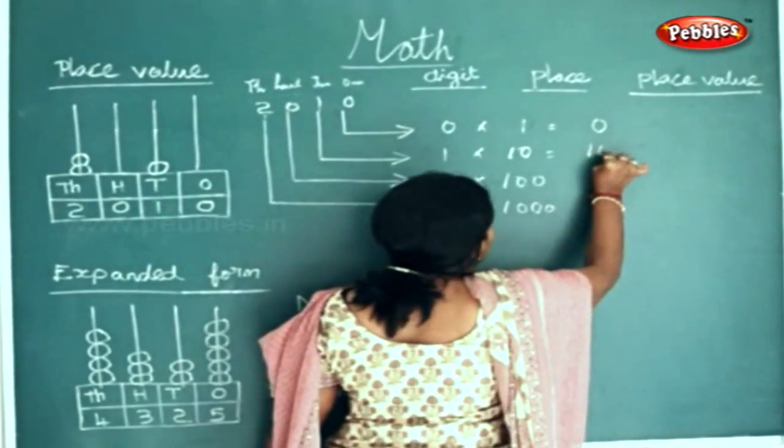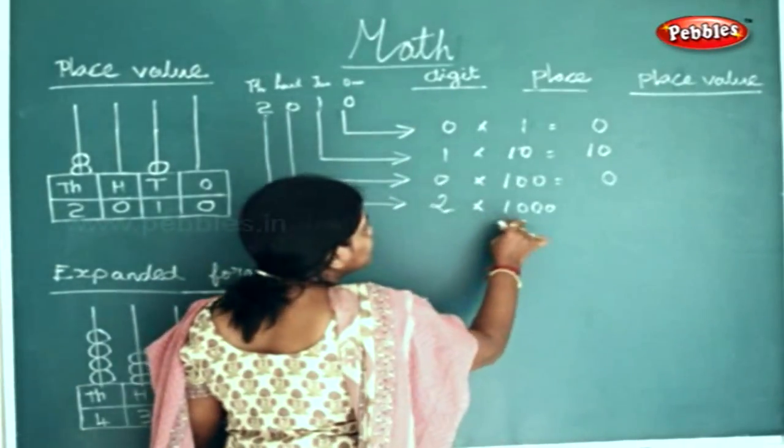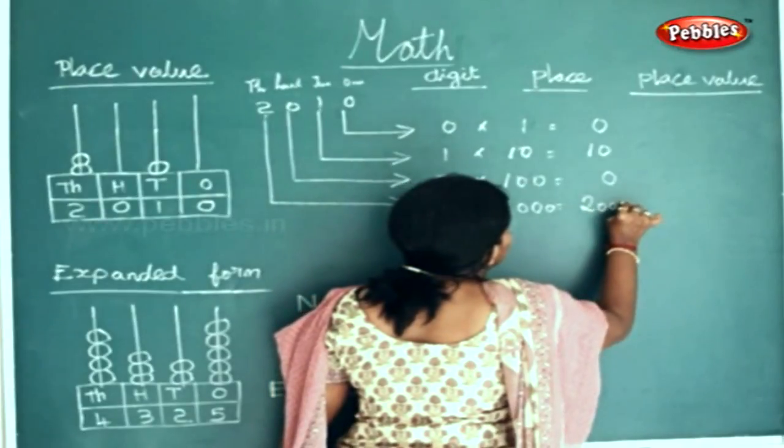1 into 10 will be 10. Again, 0 into any number will be 0. 2 into 1000 will be 2000.